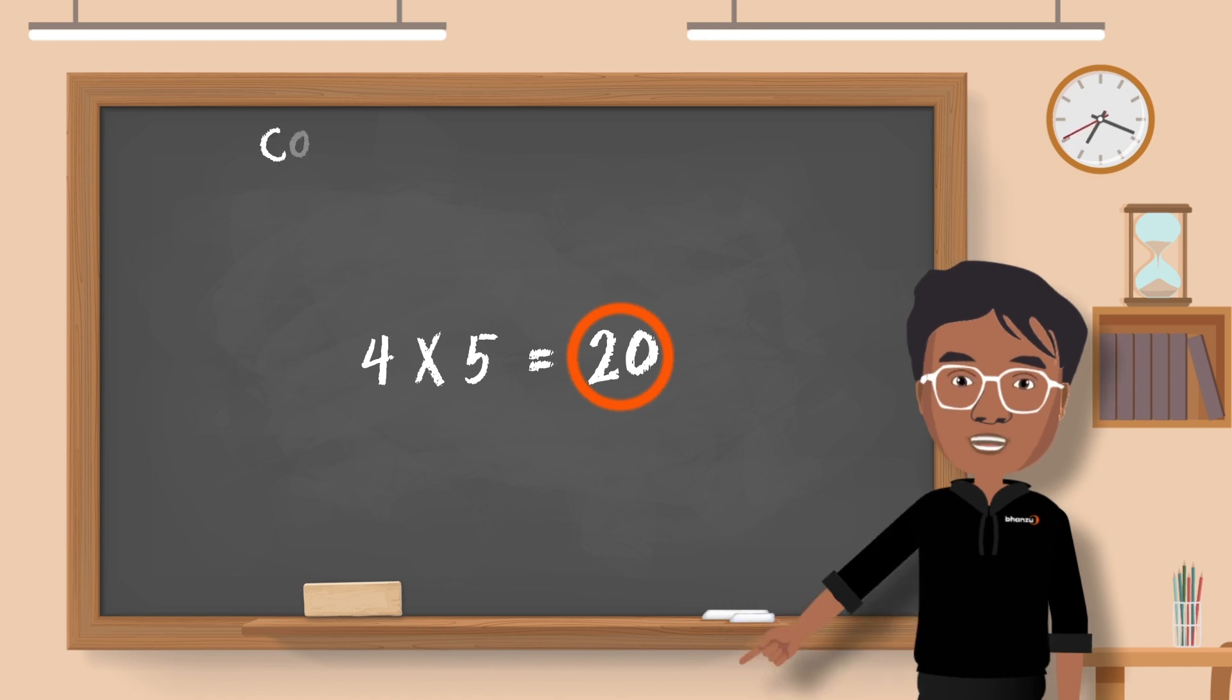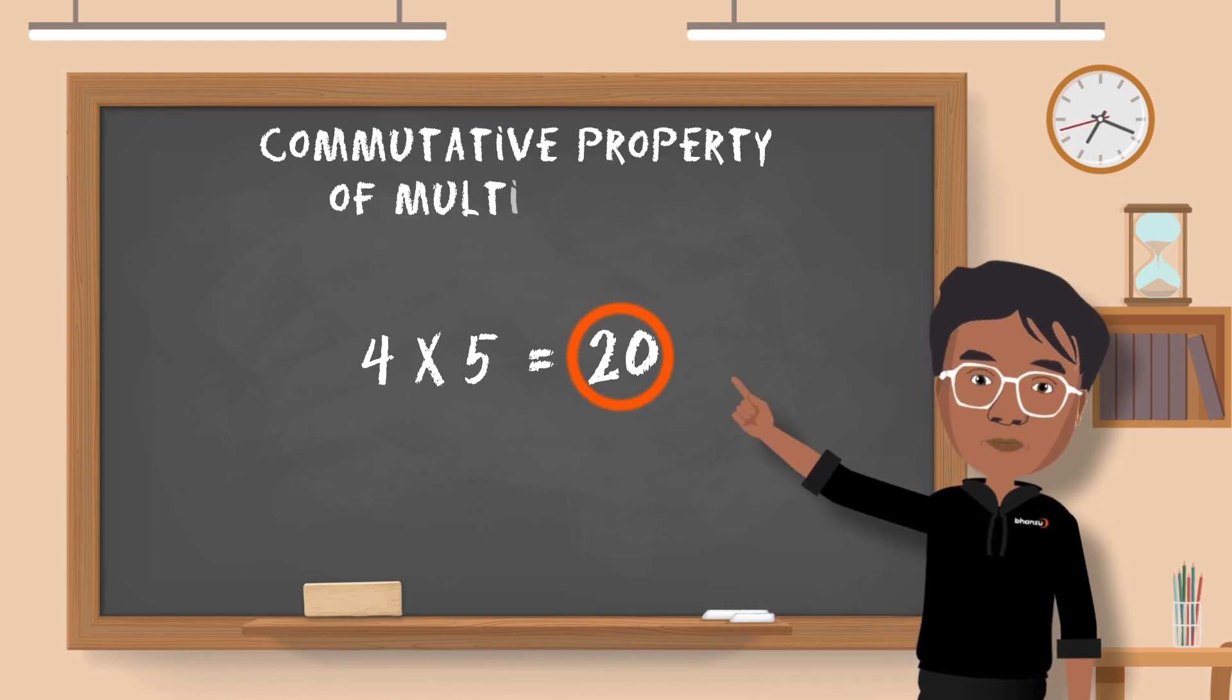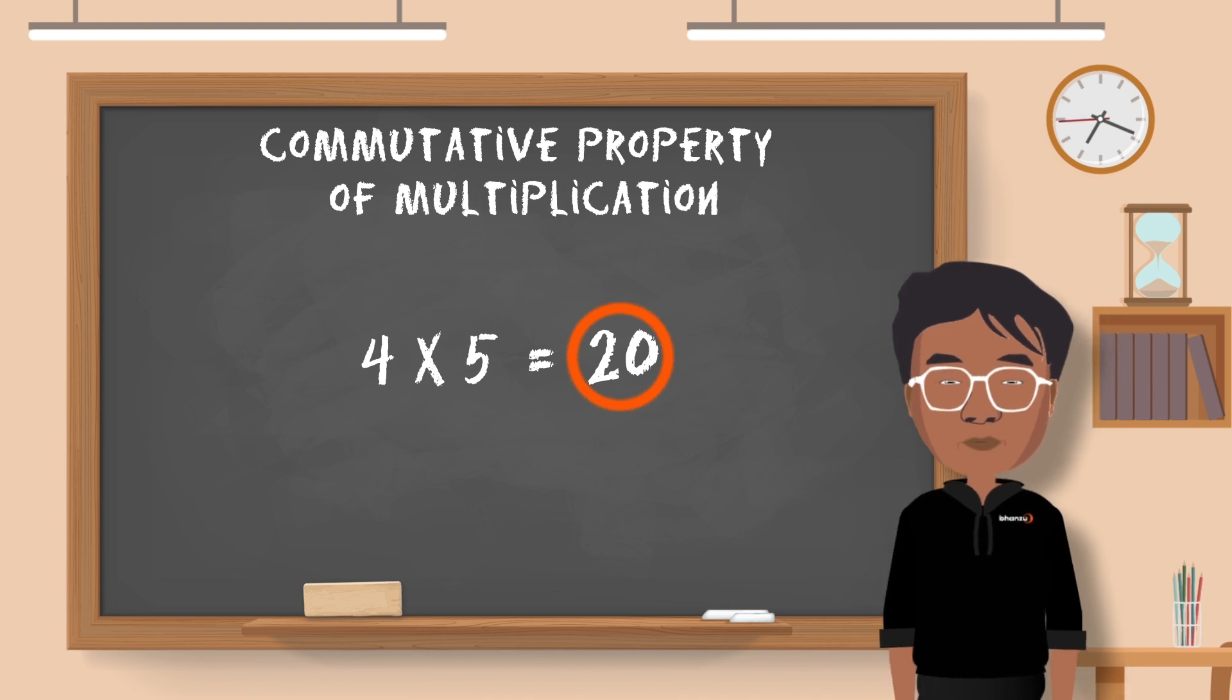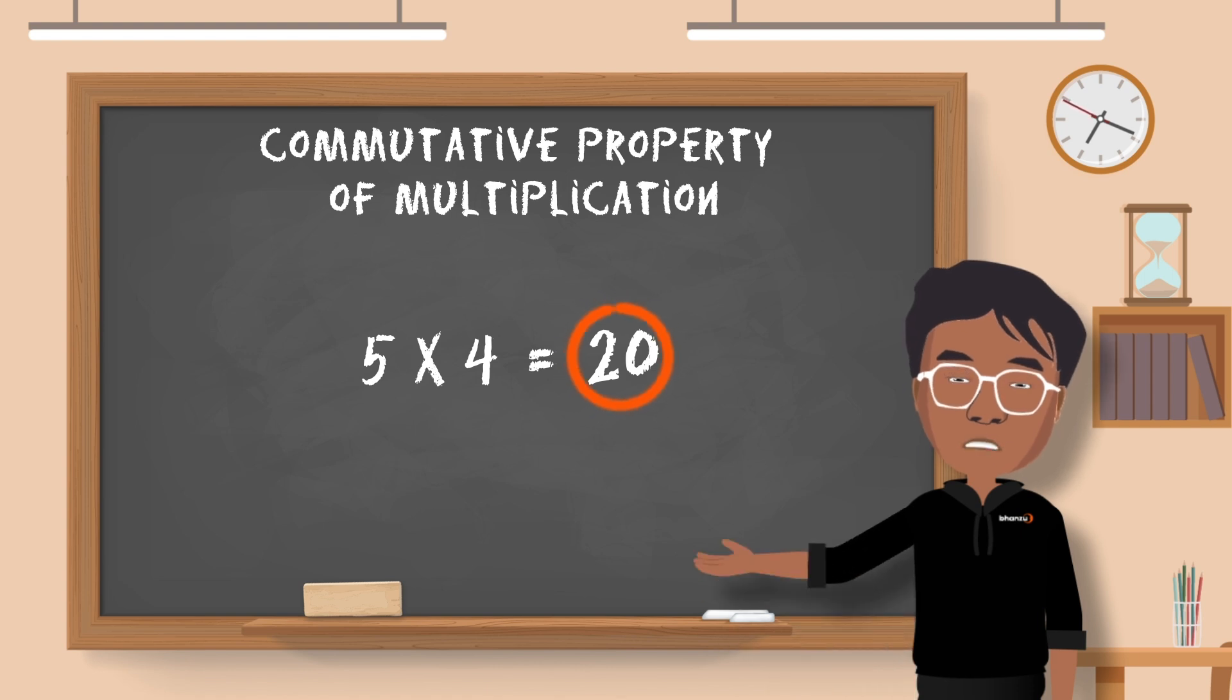This is known as the commutative property of multiplication, which states that even if the digits move to a different position, the product remains the same.